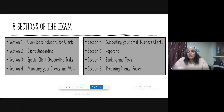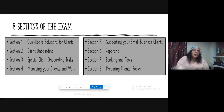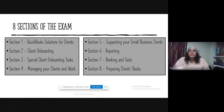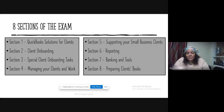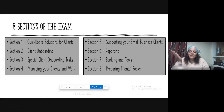Section five is supporting your small business clients — vendor credits, estimates, explaining how a customer can change an estimate to an invoice, and so on. And then the last three sections are pretty self-explanatory. Section six is reporting — looking at all the different financial reports and what they explain. I remember I had a couple of questions about accounts receivable on the exam — some were easy and some were not.